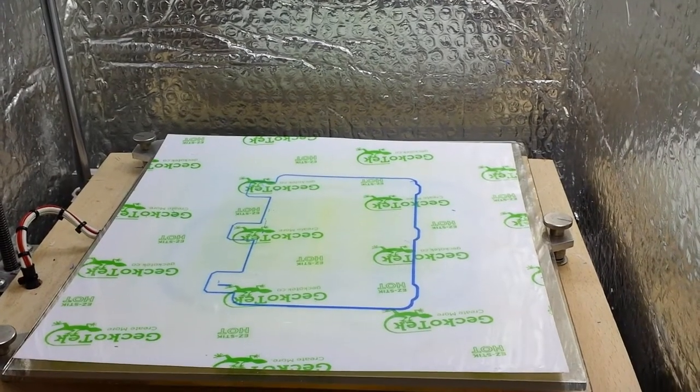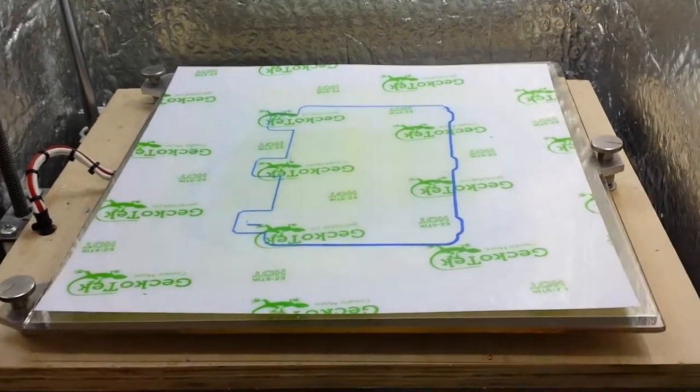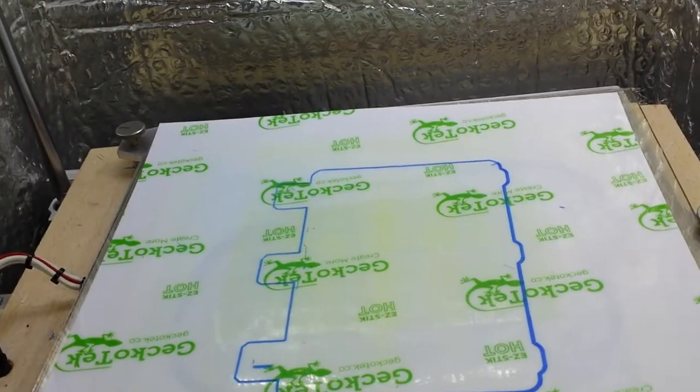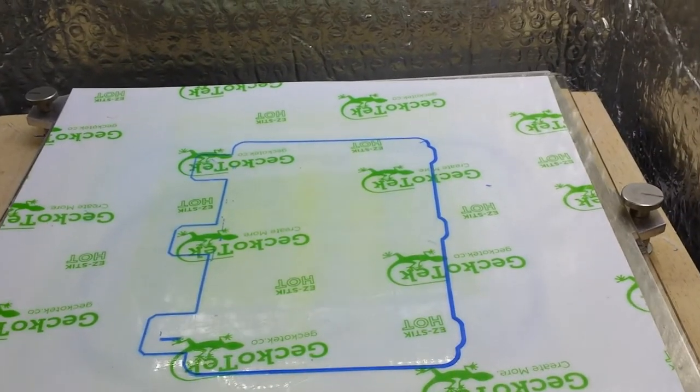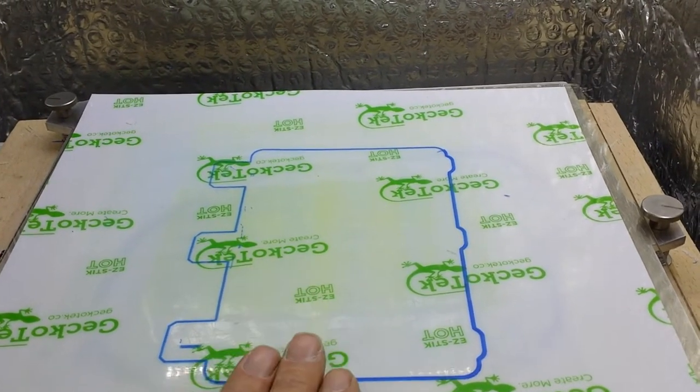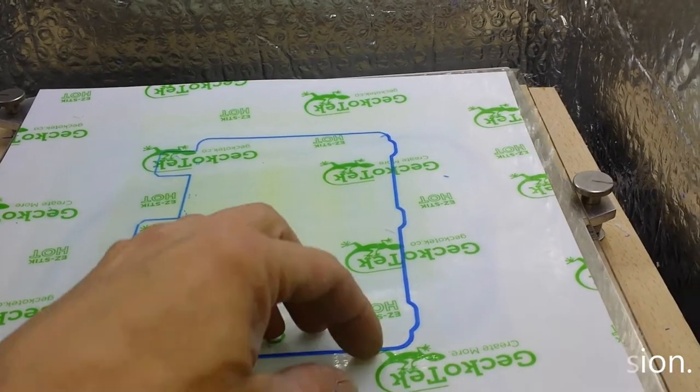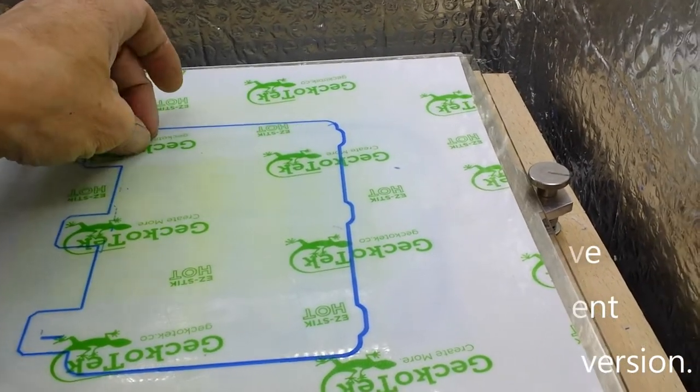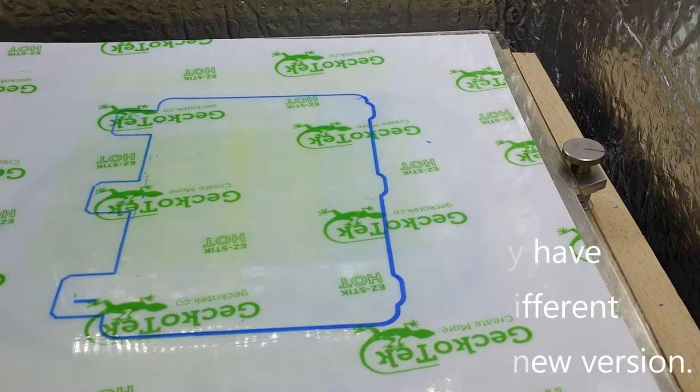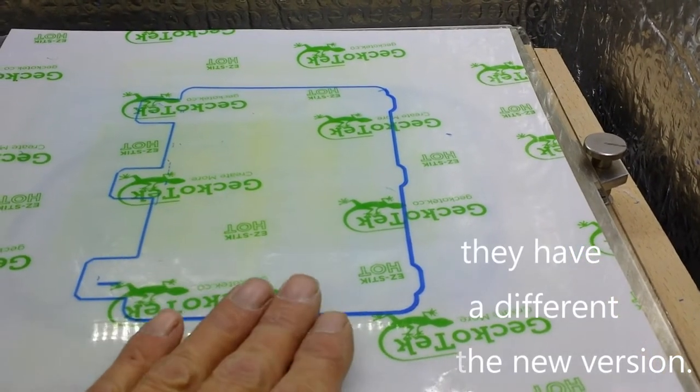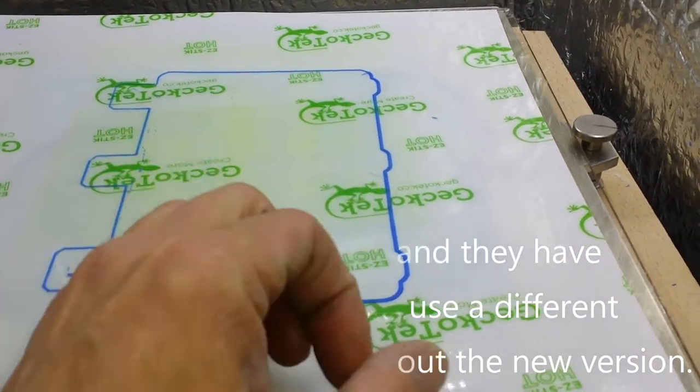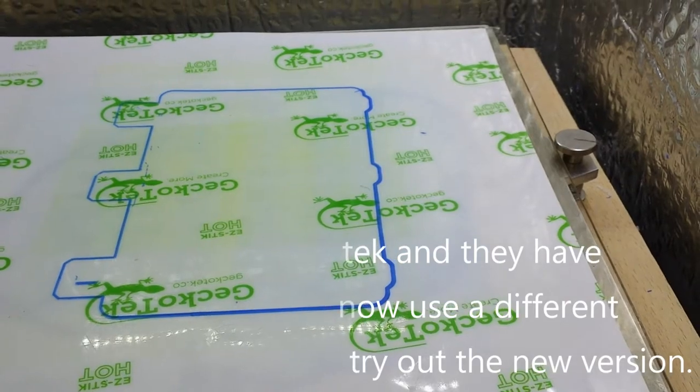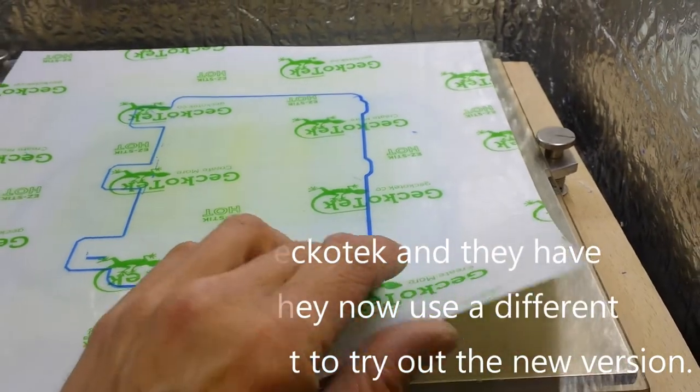Hi guys, just a quick update on the Gecko Tech that I was testing. It was performing very well indeed - everything was sticking down and staying down, sometimes a little bit too well. But for some reason on the last print that I was doing, the adhesive has given way.